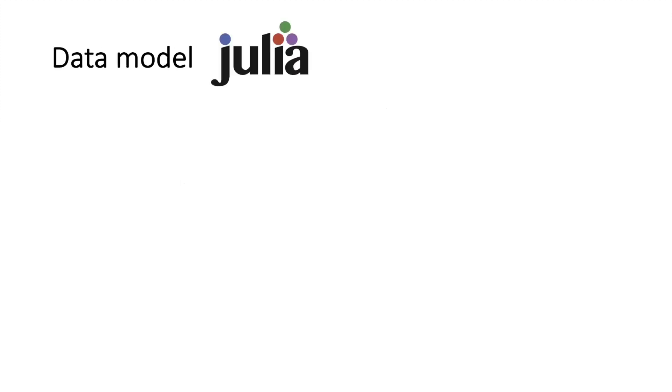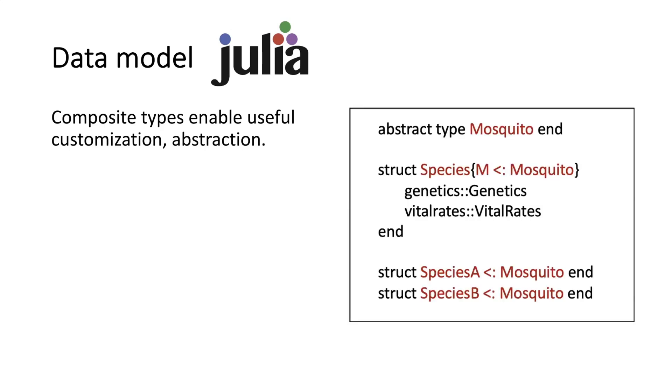Features of Julia the language that have been particularly useful include its type system and the ability to develop custom composite types that impose abstractions appropriate to my research question. This has been central to my development of a data model to organize and establish relationships between the data that I'm using about mosquitoes and a subset of key mosquito species.